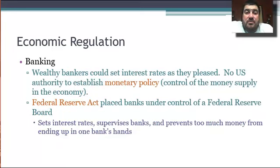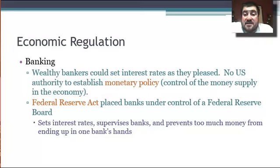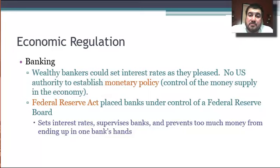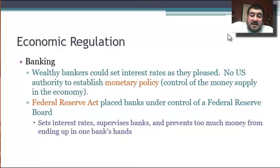For banking, there was no U.S. authority to establish monetary policy. Banks and wealthy bankers could set interest rates as they pleased. The Federal Reserve Act places banks under control of a Federal Reserve Board — essentially our national bank today. It sets monetary policy and interest rates, supervises banks, and prevents too much money from being in the banks' hands. It still controls the monetary policy of the United States today.